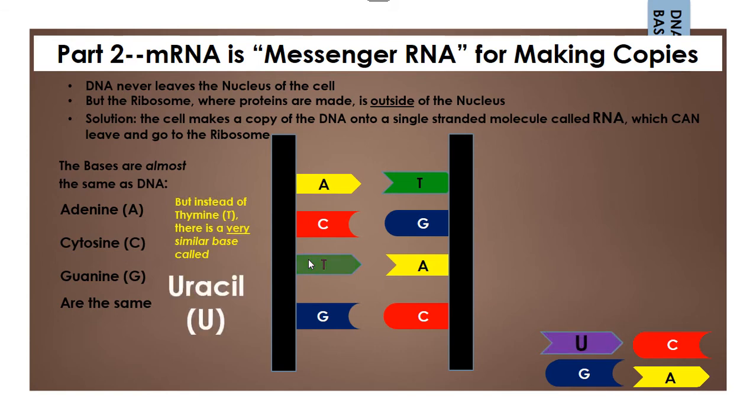Instead of thymine, we have a base called uracil, which will be put in its place. As you can see here, it still matches up with A. And so it works exactly the same way, except that having U instead of T in RNA helps the cell keep straight which molecule is which.